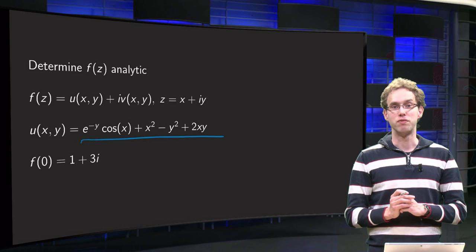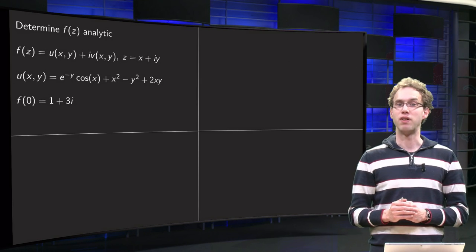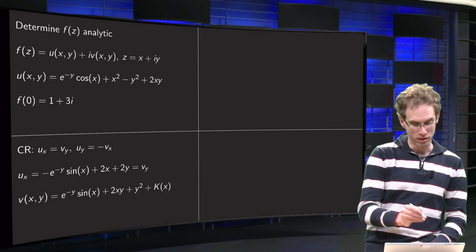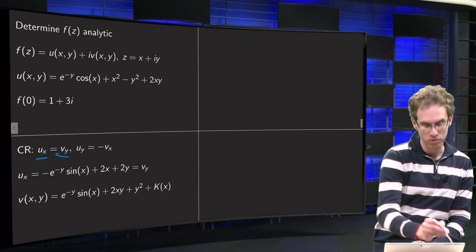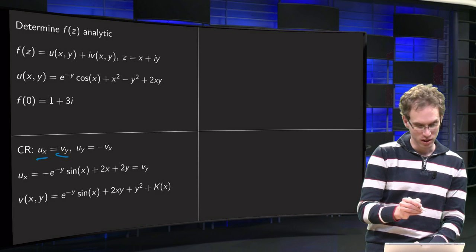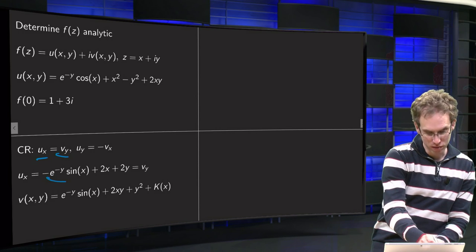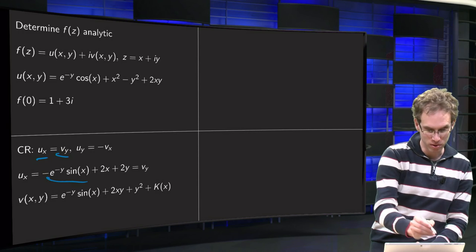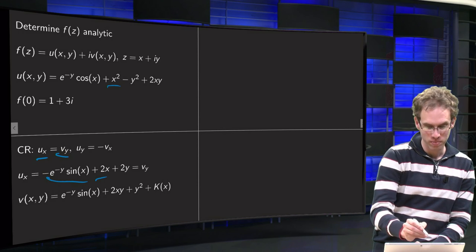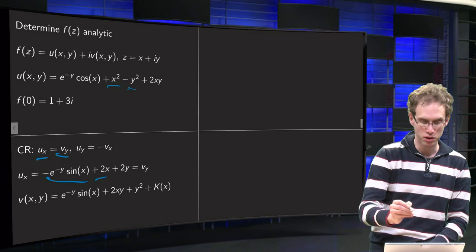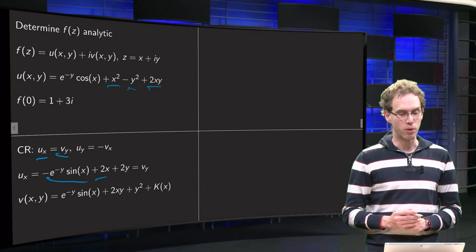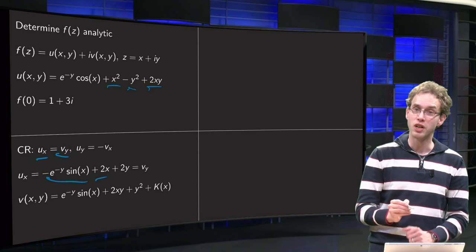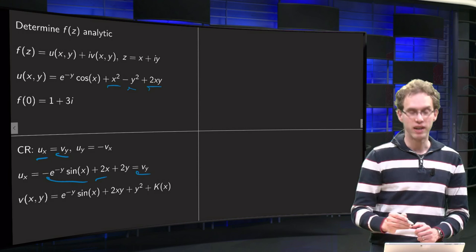We would like to find the full function f, so we want to find v. We can use the Cauchy-Riemann equations, because we know ux has to be equal to vy. We compute ux first: the derivative of e to the power minus y times cosine x yields minus sine x times the exponent, 2x from the x squared term, the 2xy term vanishes when differentiating with respect to x, and 2y. This ux equals vy by the Cauchy-Riemann conditions, so we have vy given.